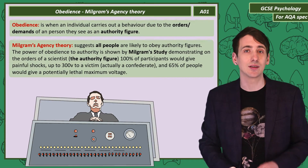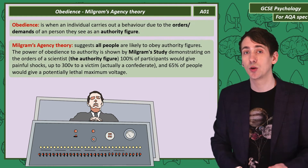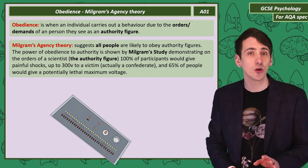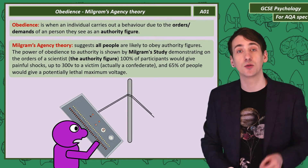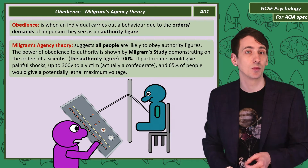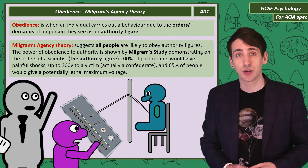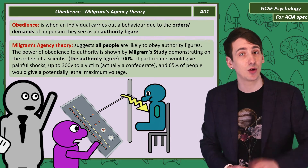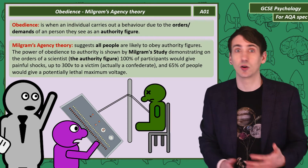He used the study as a demonstration of his agency theory, which suggests all people are likely to be obedient to an authority figure. Milgram's experiment showed that 100% of participants, acting as a teacher, would give what they thought was a real, painful 300V electric shock to what they thought was a participant in the next room — all on the orders of a scientist acting as an authority figure. The obedience was so extreme that 65% of participants actually gave a potentially lethal maximum voltage, even after the victim stopped shouting, seemingly unconscious or dead.